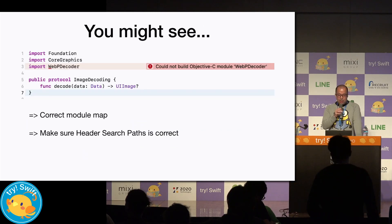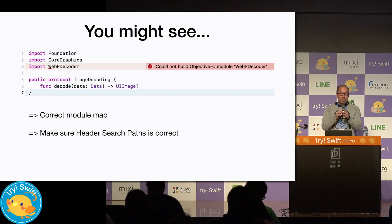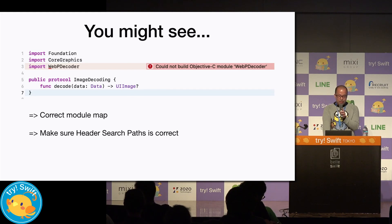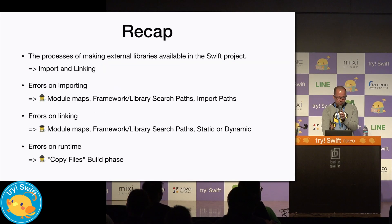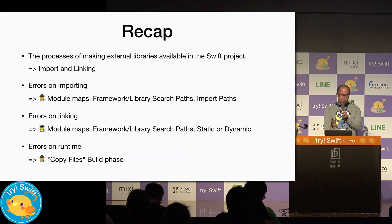You might see the error shown on the slide. An error with Objective-C module indicates something wrong in the module map. Usually, the problem is that the header files listed in the module map can't be found. So correct the module map or make sure the header search path is correct. Header search paths referenced from header files listed in the module map should be listed in the header search path. Now we've figured out the process of making external libraries available in the Swift project. Hopefully, this helps you troubleshoot when you face problems with linking libraries.